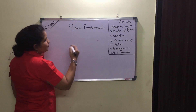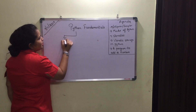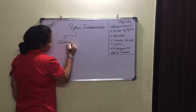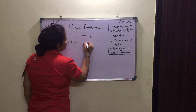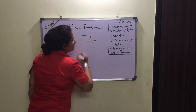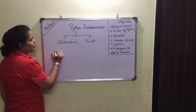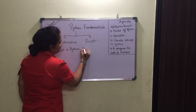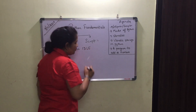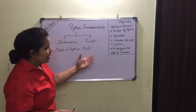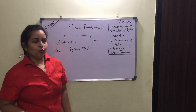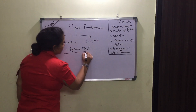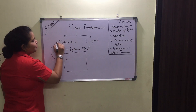The next topic is modes of Python. There are two modes: interactive mode and script mode. To start with Python, click on Start and then Python IDLE — whatever version you are using, 2.7 or 3.7. Here we will be covering commands of 3.7.4. When you click on Python IDLE, it will open a window that is basically the interactive mode.